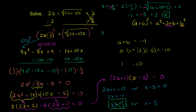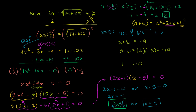With x = 5: the left side is 2 times 5 = 10. The right side: 14 plus 10 times 5 = 14 plus 50 = 64, and the principal square root of 64 is 8; 8 plus 2 = 10. This is true. So the answer to this radical equation is x equals 5. x = negative 1/2 is extraneous.